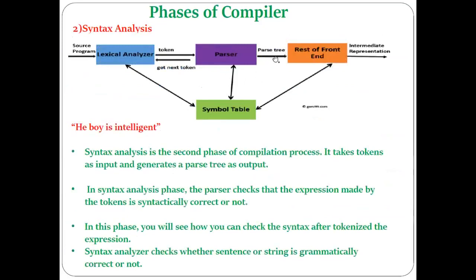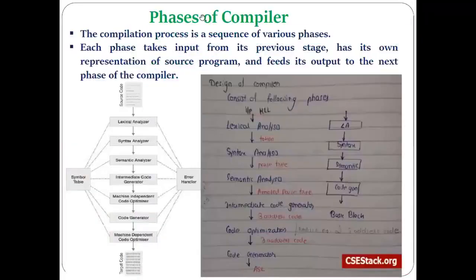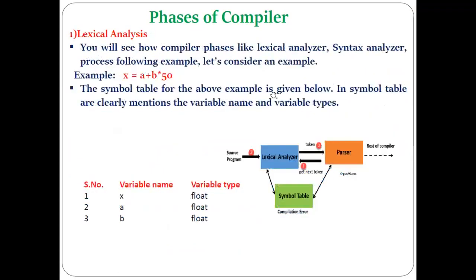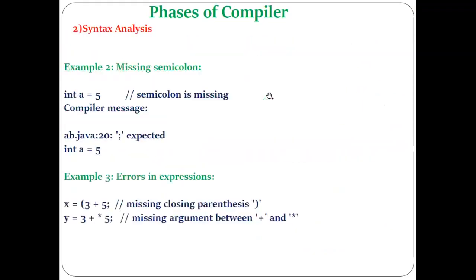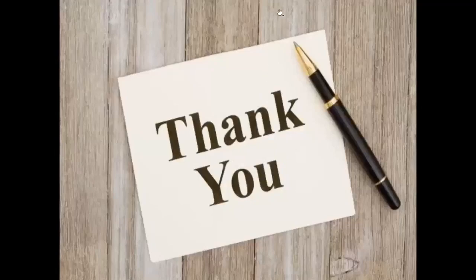That's it regarding the second phase of the compiler — syntax analysis. The parse tree output is sent to the next phase of the compiler, which is semantic analysis — that we will discuss in the next lecture. Please go through this lecture once again, and if you have any doubts you can comment in the comment section. Thank you.